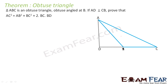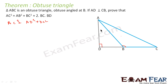AC² = AB² + BC² + 2·BC·BD, where B is the obtuse angle. To prove this, it's very simple. We know that AC² = AD² + DC². If we take the bigger triangle ADC, it is a right triangle, so AC² = AD² + DC².